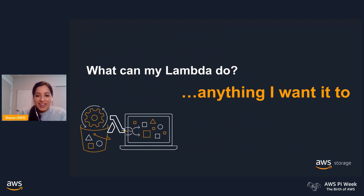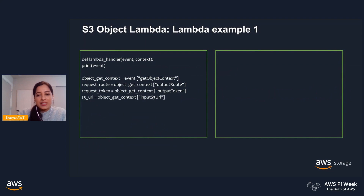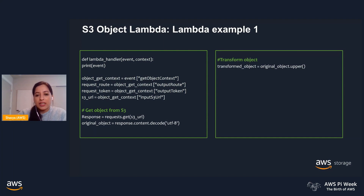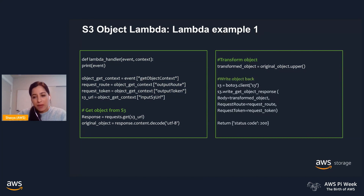Here are two simple examples of what Lambda can do. In the first example, Lambda receives the inputs discussed previously, then uses the pre-signed URL to fetch the original object from S3, followed by transforming the object. In this case it's a fairly simple transformation: operating on a text object and translating all content from lowercase to uppercase. Lastly, using the WriteGetObjectResponse API, we can stream the object back to the requester.